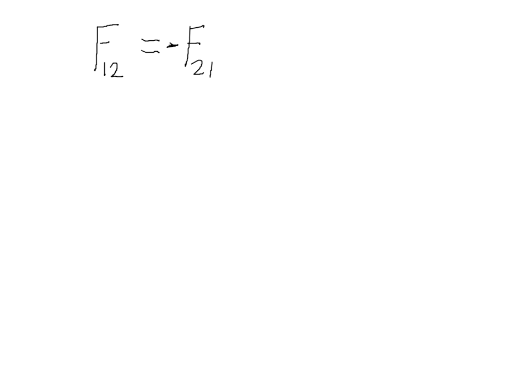That says that if one thing — say a person — pushes on the wall with a force of 10 Newtons to the right, then the wall is pushing back on the person with a force of 10 Newtons to the left. Forces always occur in pairs like that, because any time any object exerts a force on any other object, the second object exerts a force equal in magnitude but opposite in direction.